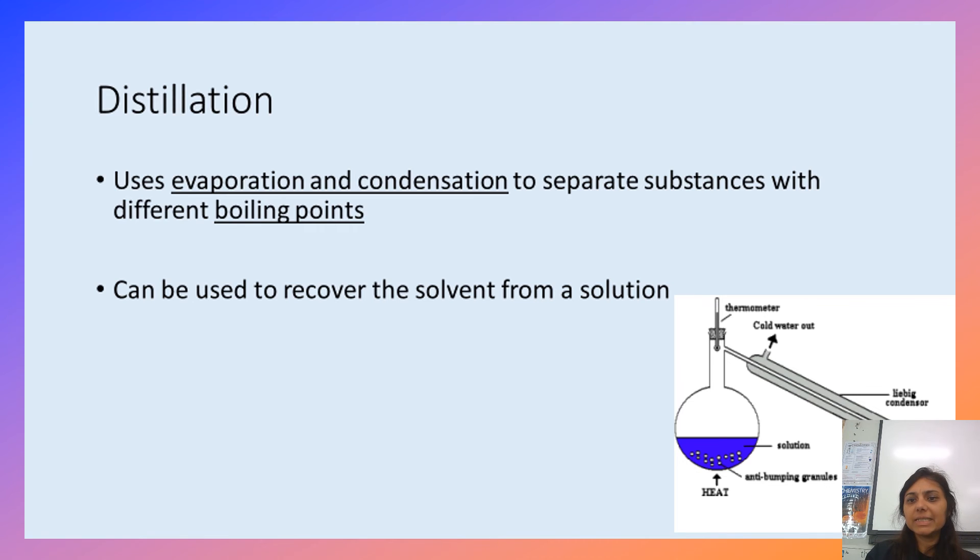You then have a condenser which has two sheets of glass that has running cold water along it. So as the vapors of water come up on the tube they then condense with the cold water which then collects as pure water from the ink. And what's left here is the ink in the round bottom flask.